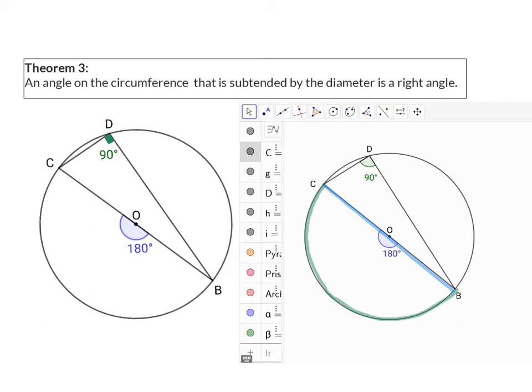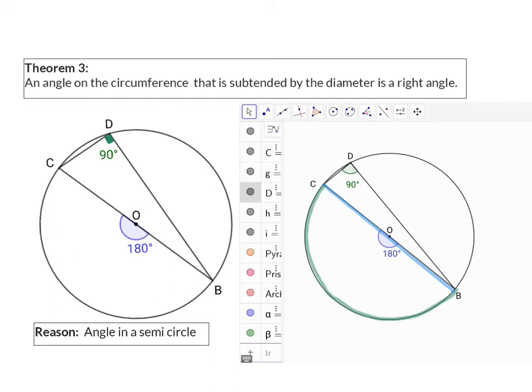It doesn't matter where D is, as long as it's on the circumference and formed from the diameter of the circle, the angle will always be 90 degrees. Our reason for Theorem 3 is angle in a semicircle.